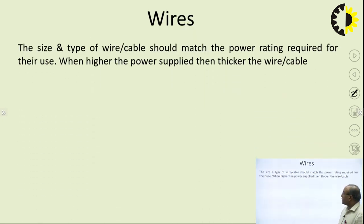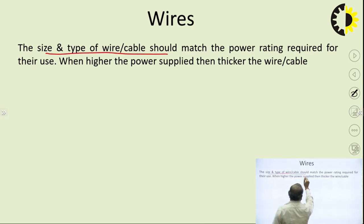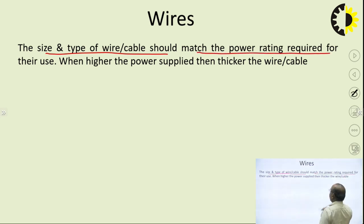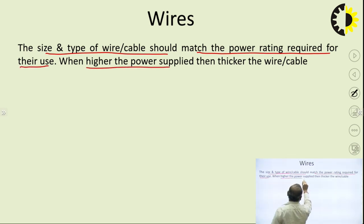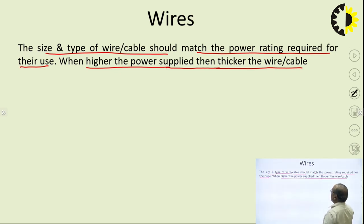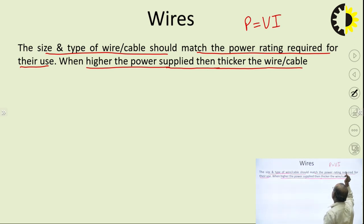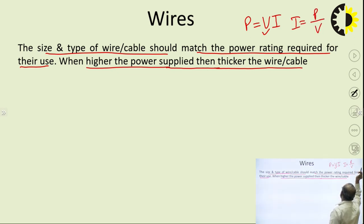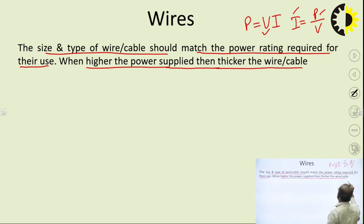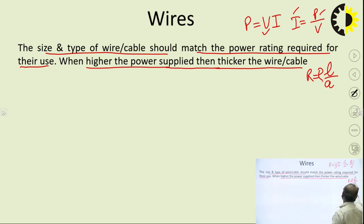The size and type of wire or cable should match the power rating required for their use. If higher power is to be supplied, the thickness of the wire or cable must be more. When supplying high power at a given voltage, the current will also be high since current I = P/V. For large current, resistance should be small, and we know resistance R = ρL/A, so for small resistance, cross-sectional area must be more — that is why we require thicker wire for carrying larger current.